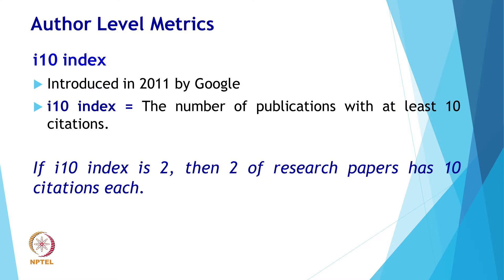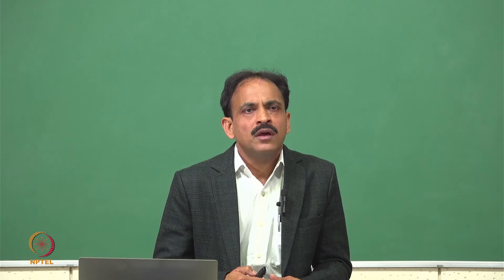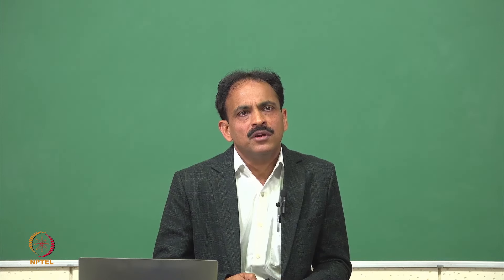I-10 index was introduced in 2011 by Google. It is the number of publications with at least 10 citations. If an I-10 index is 2, it means that 2 research papers have 10 or more citations each. I-10 index is very simple, free, and straightforward to calculate, but it is only available in Google Scholar.